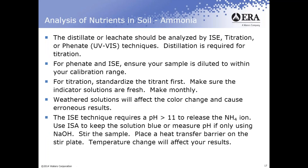Either the leachate or distillate should be analyzed by selective electrode, titration, or the phenate method. If doing titration, distillation is required. For phenate or selective electrode, ensure samples are diluted within your calibration range. For titration, make sure you standardize your titrant first for an accurate normality value. Make sure indicator solutions are fresh — it's recommended to make them monthly. If your indicator solution is old, it may take longer to see the color change, causing you to use more titrant than needed and giving erroneous results.